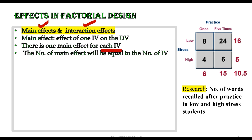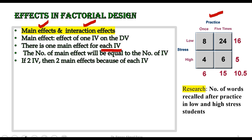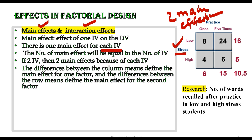If we have two independent variables there would be two main effects; if we have three independent variables there would be three main effects. In this example, practice is one independent variable and the magnitude of stress is the second. Because we have two independent variables, there are two main effects: one due to practice and one due to stress. The difference between column means defines the main effect for one factor, while the difference between row means defines the main effect for the second factor.